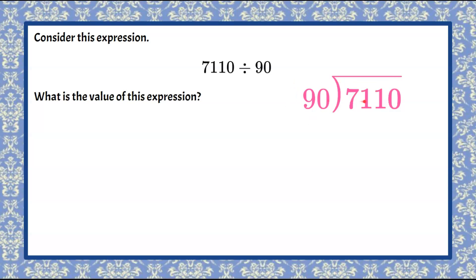Alright, we're ready to start. 90 does not go into 7. It does not go into 71. So we're going to find out how many times 90 will go into 711. Because it ends in zero, that kind of makes our job easier, and we can just think about the first two digits and add a zero.